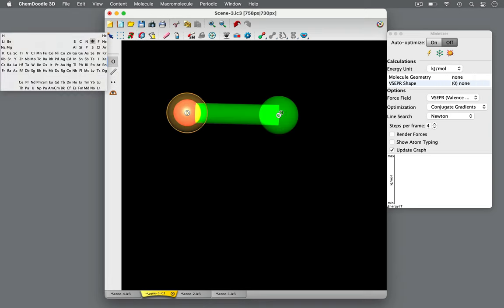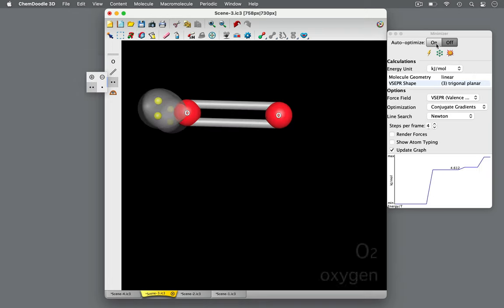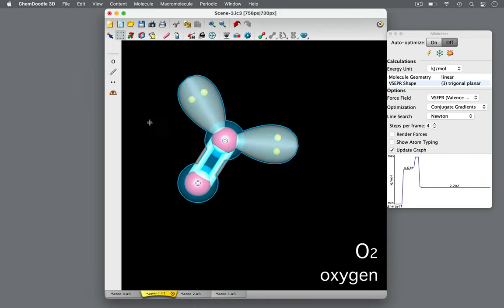What if there are two lone pairs? Let's look at the oxygen molecule. Consider this oxygen atom as a central atom. It has another oxygen atom attached to it and two lone electron pairs. There are three domains of high electron density about the central oxygen atom.